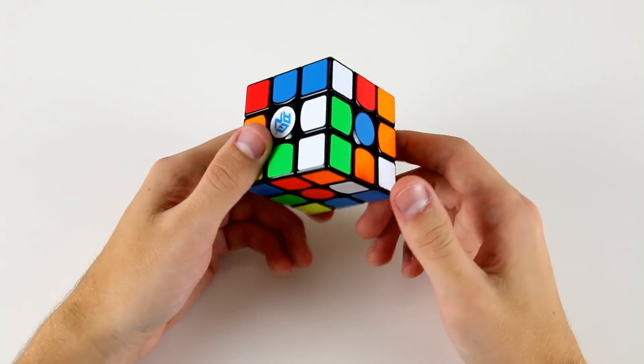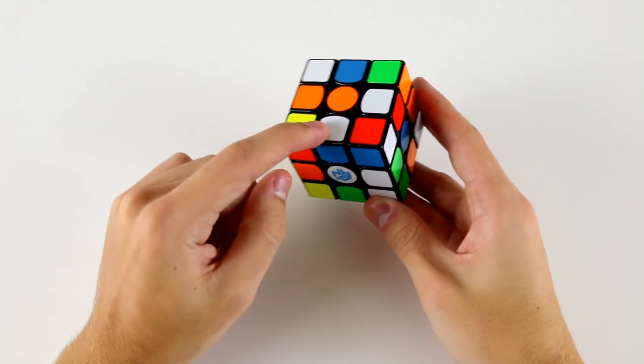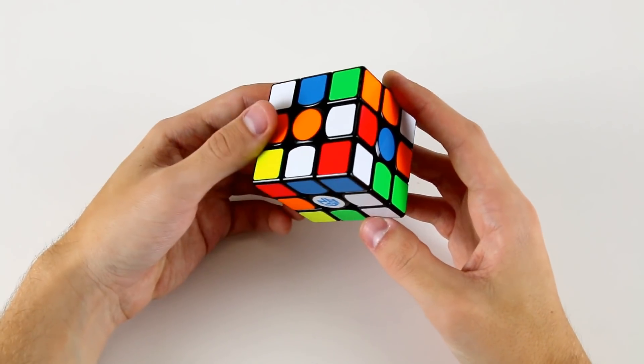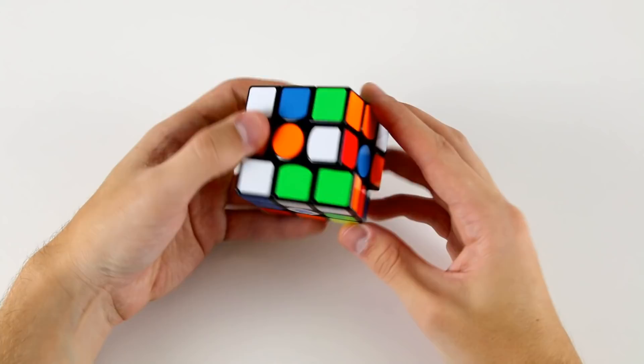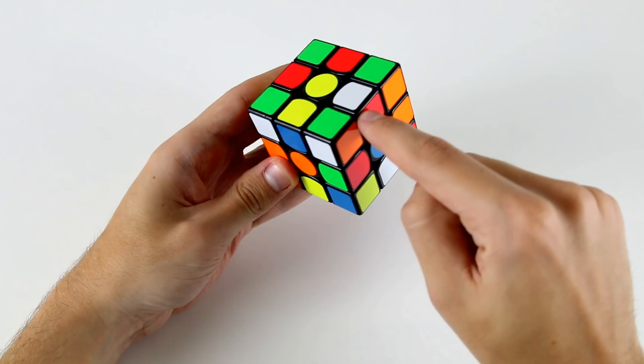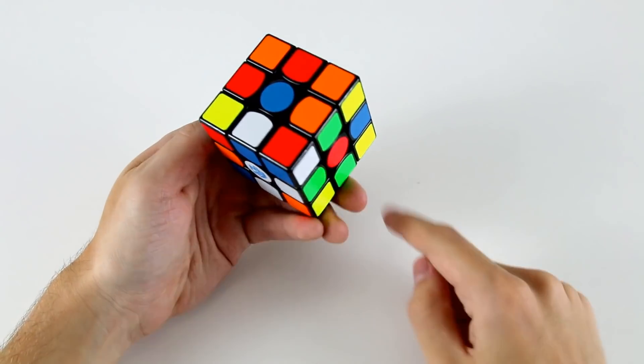We need to figure out how we're going to insert these and deal with this misoriented cross edge here. How I would do it is I would do a d' r d2 which solves these two relative to one another and also sets this one up to be inserted into the cross layer.